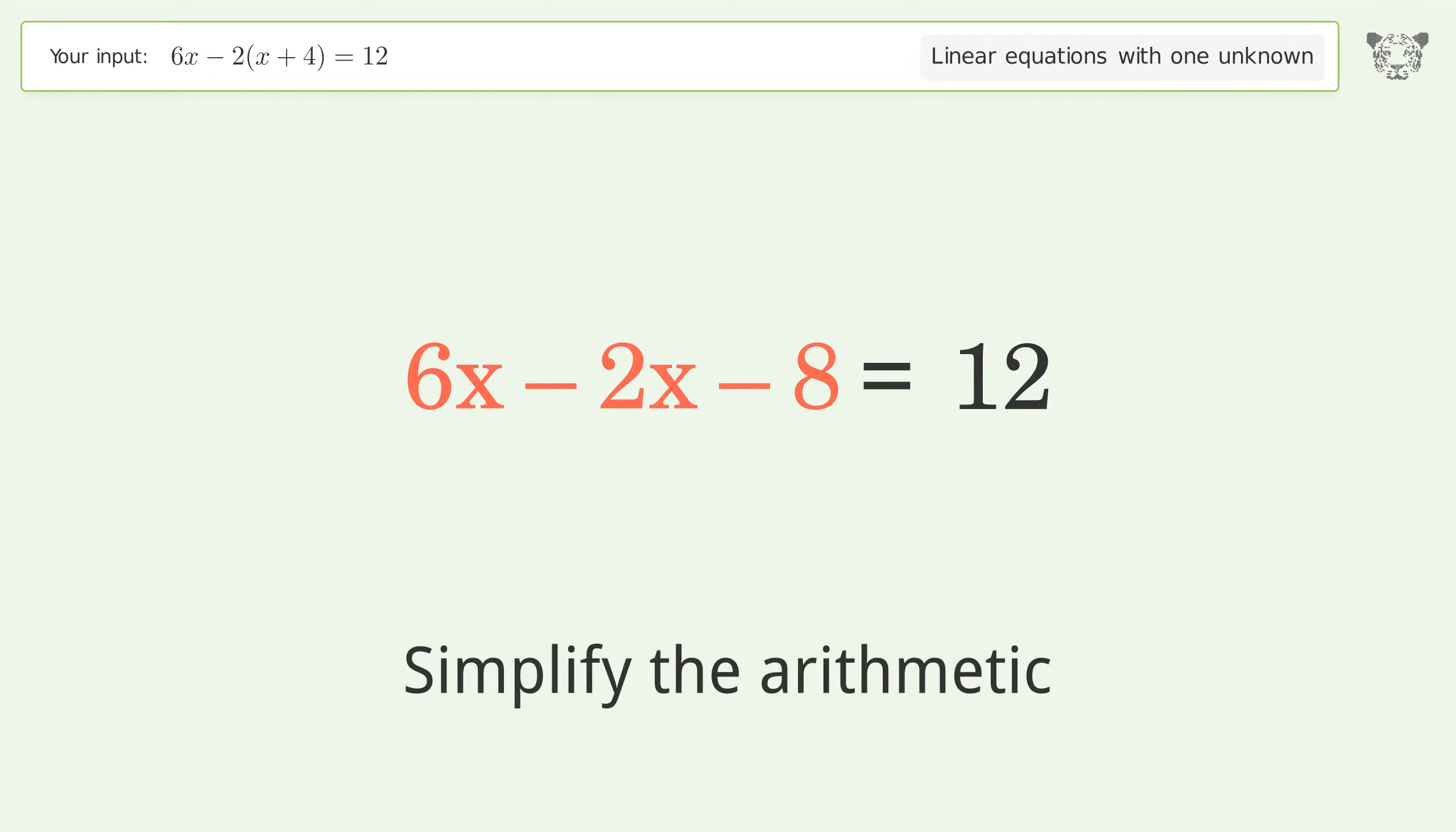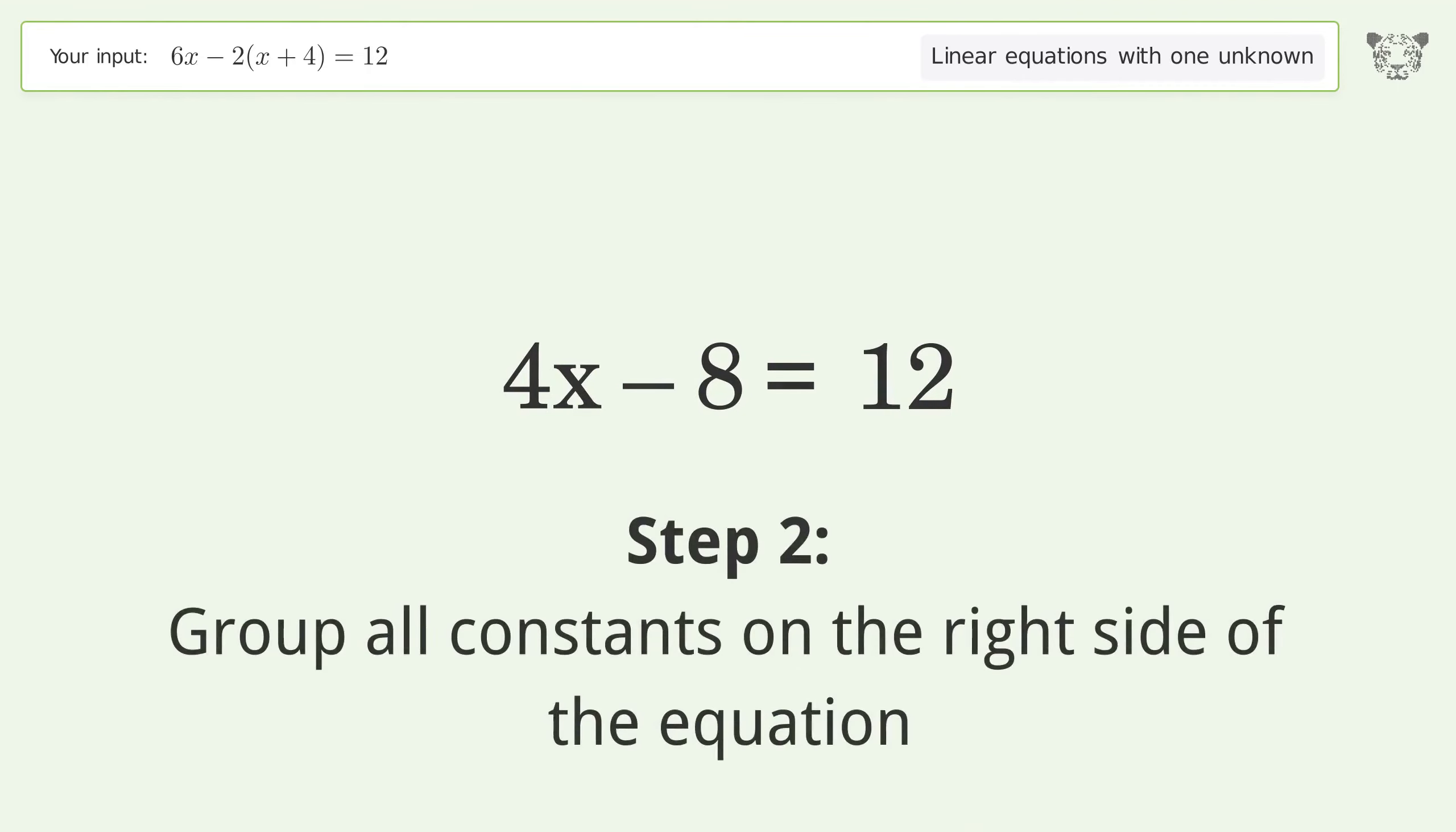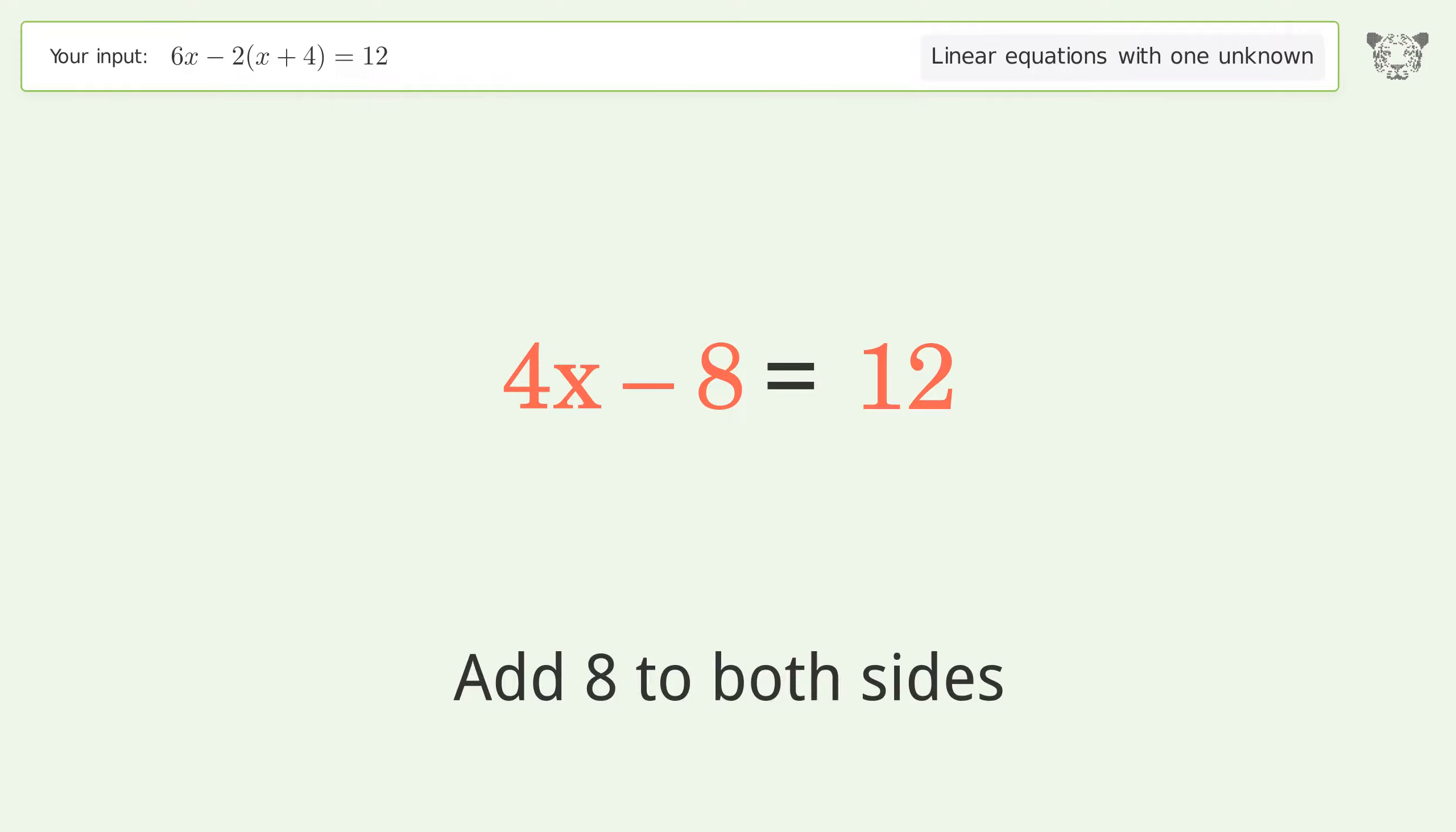Simplify the arithmetic. Group all constants on the right side of the equation. Add 8 to both sides.